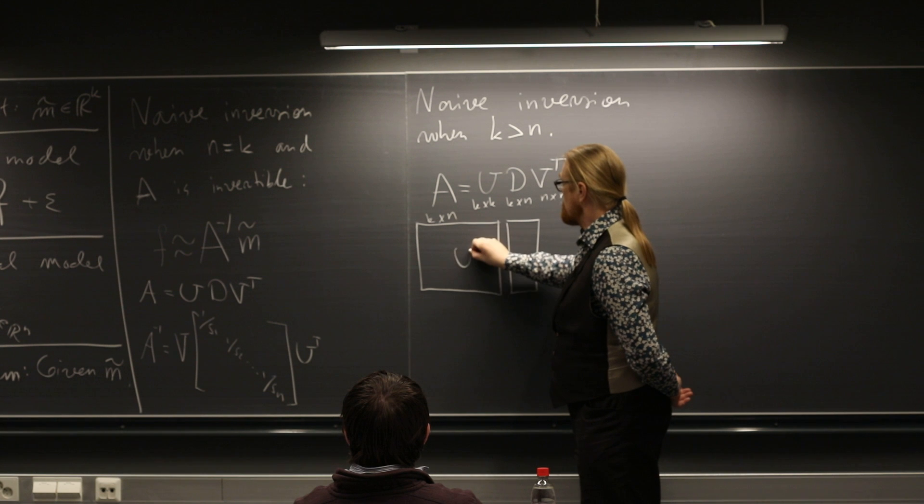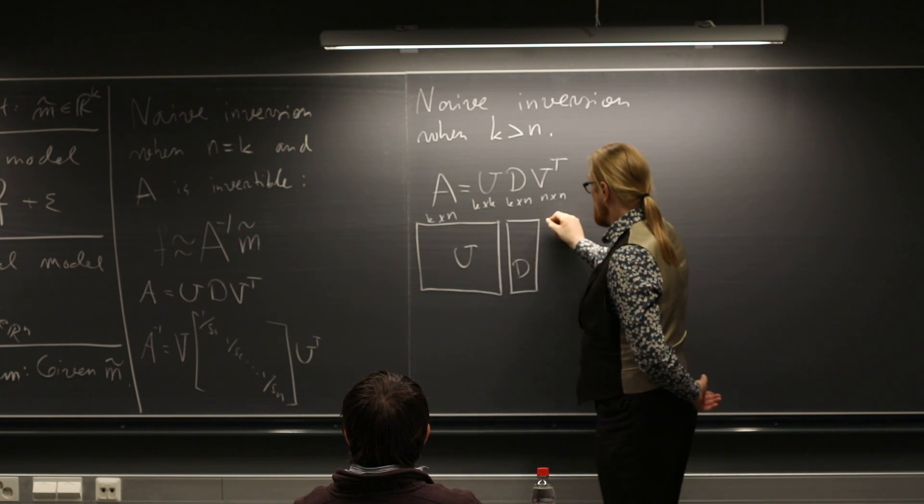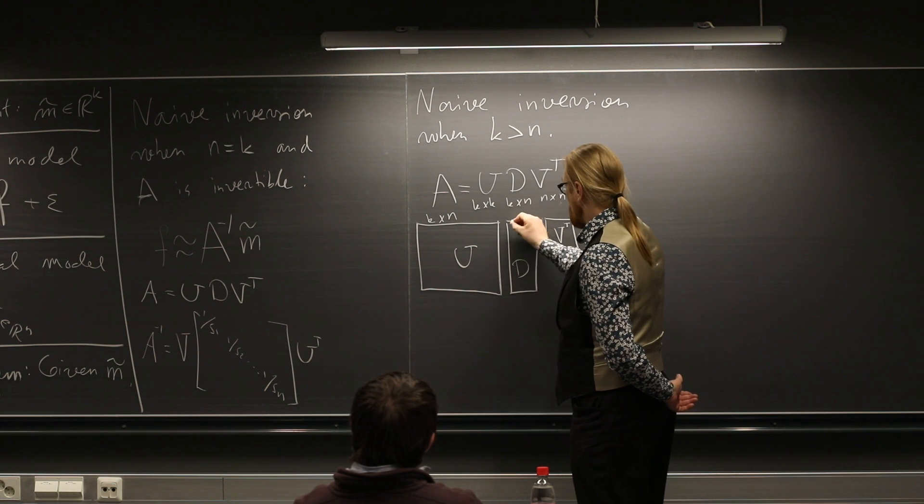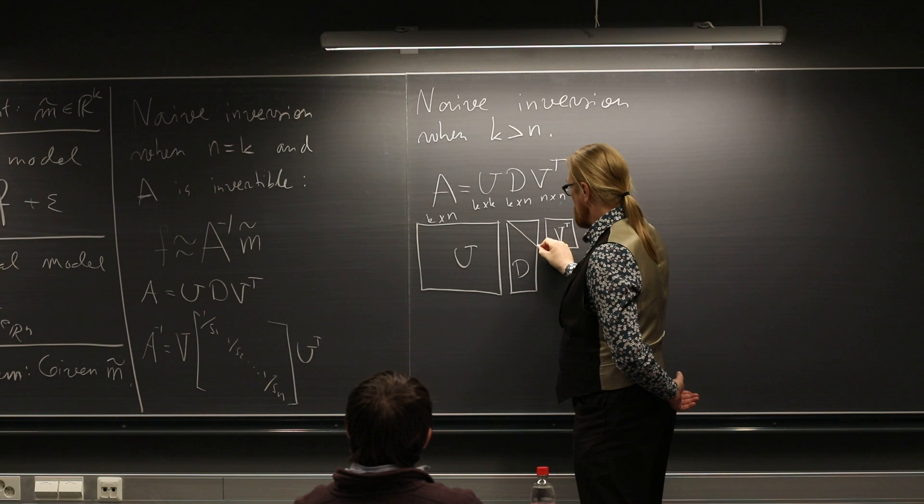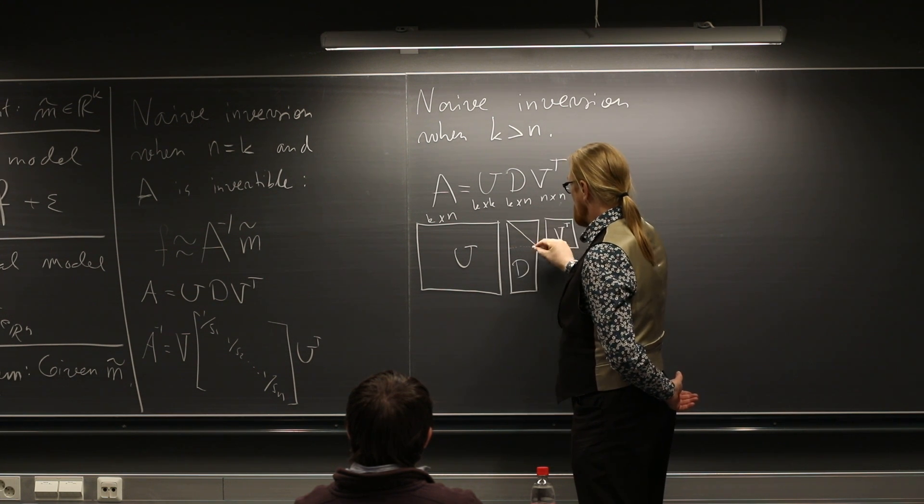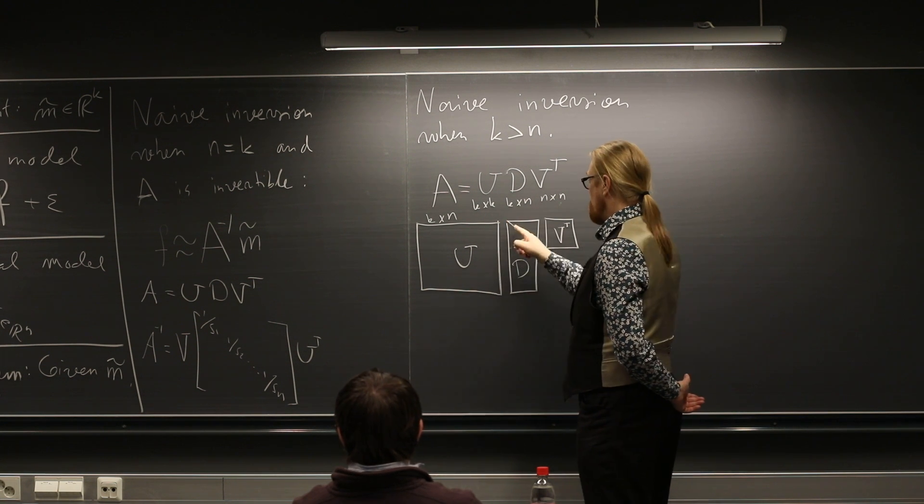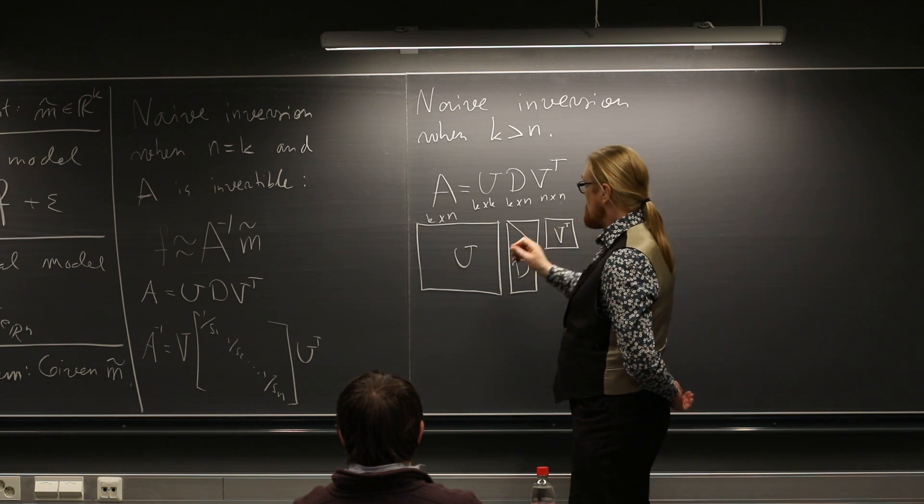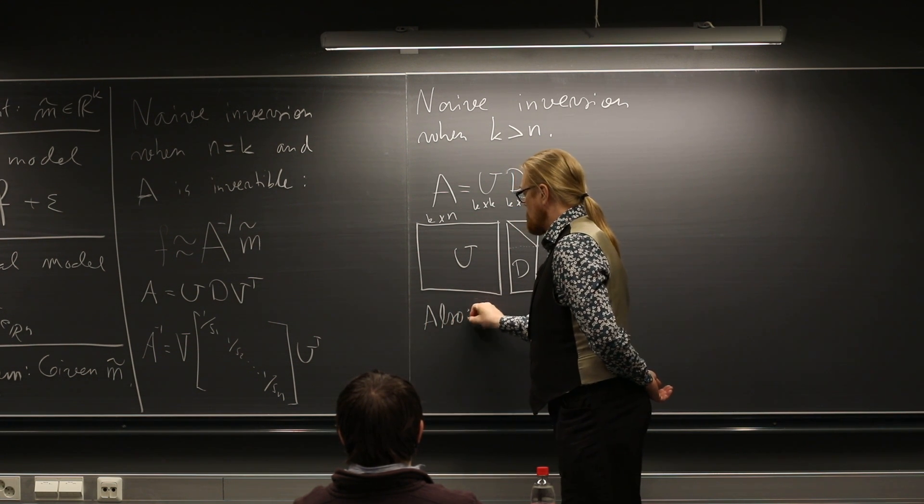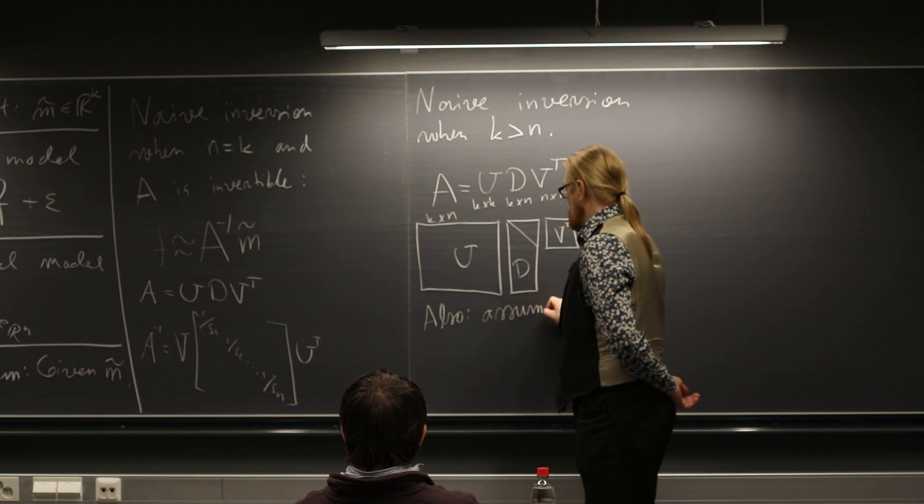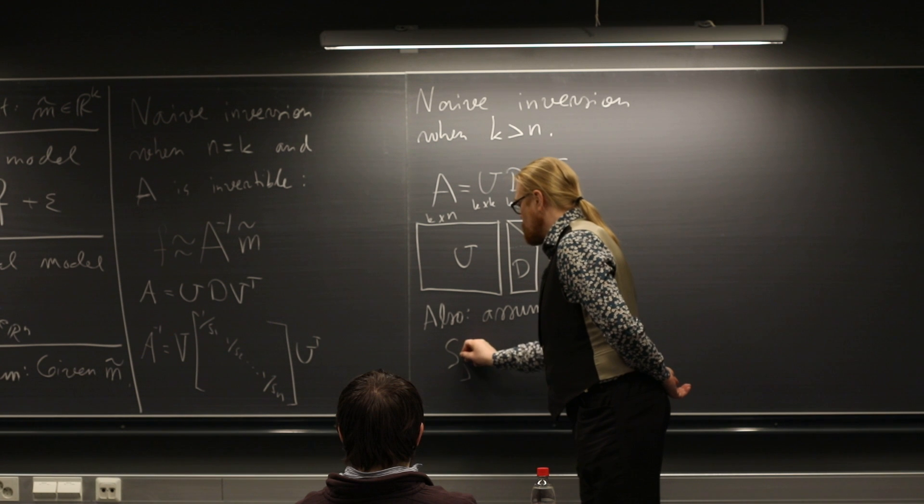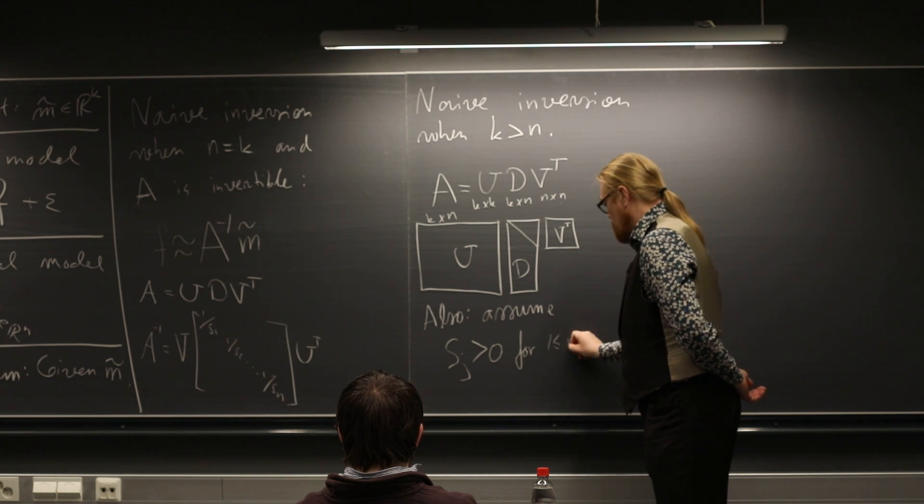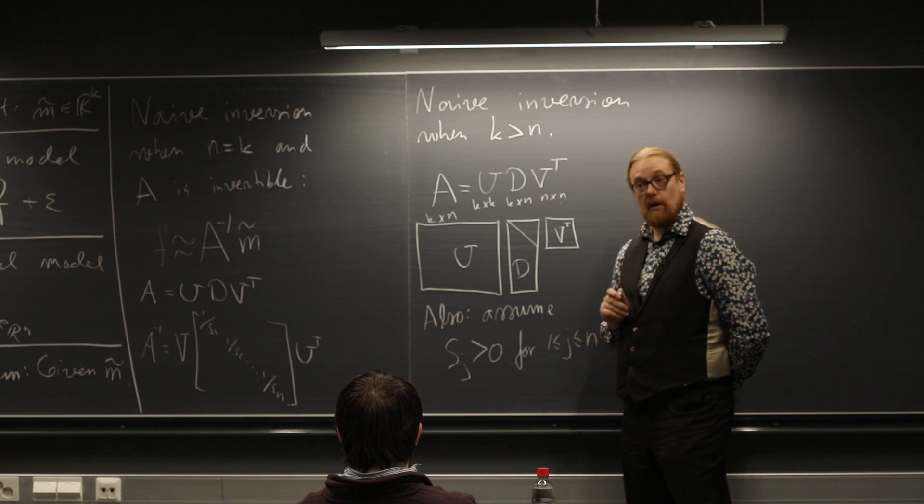And therefore, so this is U, this is D, and this is V. They have these kind of sizes. And the singular values are along the diagonal here, but the diagonal stops here. And actually, everything down here is just zeros. So we have the diagonal here. And also, in this discussion, let's assume that the singular values are really strictly positive. I mean all of them for all J up to N. All of them are strictly positive.